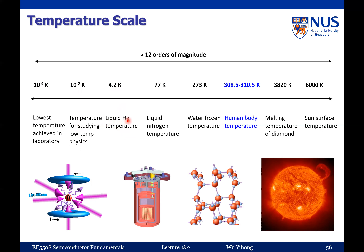4.2 Kelvin is called the liquid helium temperature. If you make helium gas into liquid, it automatically reaches this temperature. If you put your object inside liquid helium, it will reach 4.2 Kelvin. Liquid helium is quite expensive because it is a byproduct of oil production. In Singapore, 100 liters of liquid helium can cost more than 3,000 Singapore dollars.